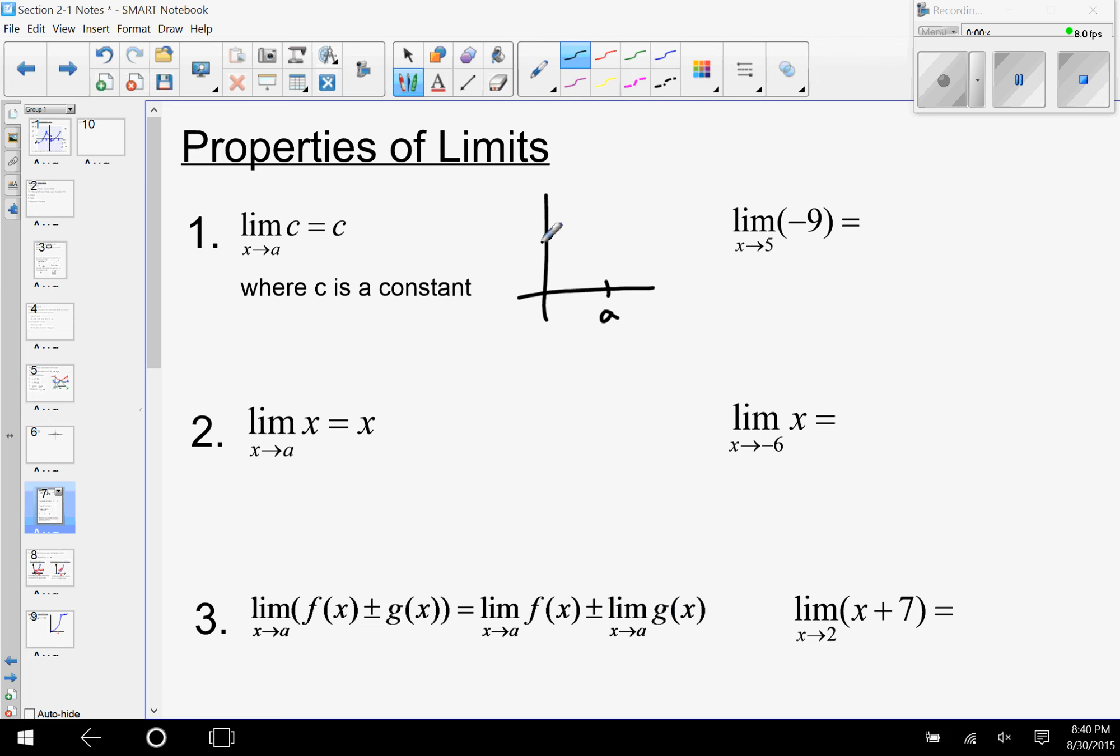Here's a, and this is the constant. The graph of c, of a constant, remember, is a horizontal line, and it's pretty easy to see that as my x values are getting closer to a from either side, my y values are all staying the same, so my y values are approaching c. So it just means that if I'm taking the limit of a constant, it is the constant. For example, the limit as x approaches 5 of -9 is just going to be -9.